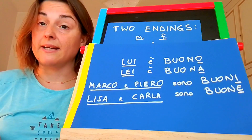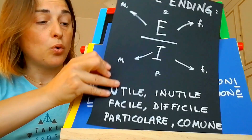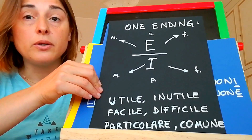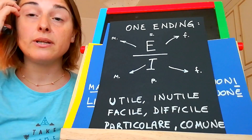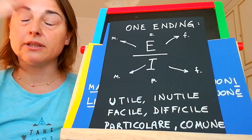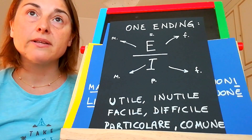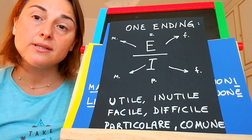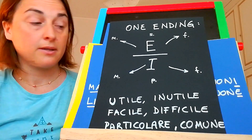Then we have a second class of adjectives where you find only one termination for both the masculine and the feminine. The only thing that changes is the singular and plural terminations.